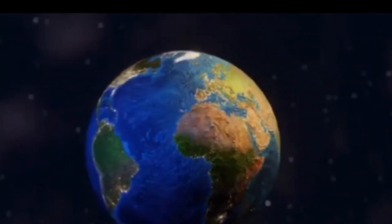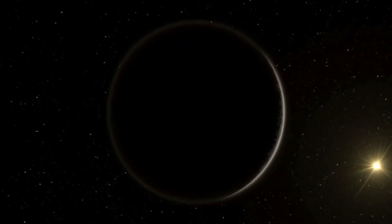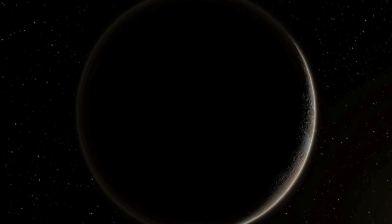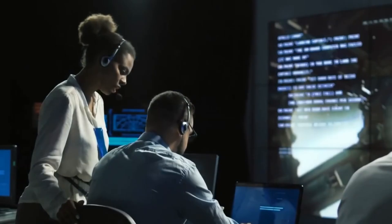While it has potential, Proxima Centauri B faces challenges such as tidal locking and stellar activity, including UV radiation, which could disrupt its ozone layer and result in dangerously high levels of UV exposure.